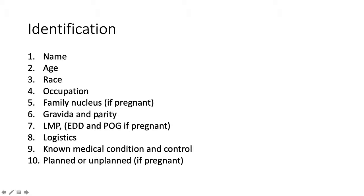Gravida and parity: gravida is if she is currently pregnant, parity is how many times she has given birth. LMP — last menstrual period — is a very important question in gynecological history taking. If she is pregnant, you ask for the expected day of delivery and period of gestation. Logistics means how far her house is from the hospital, as this can affect management — for example, in rural areas the house might be 3 days walking distance away and she might deliver anytime, so you decide whether to keep her in hospital.